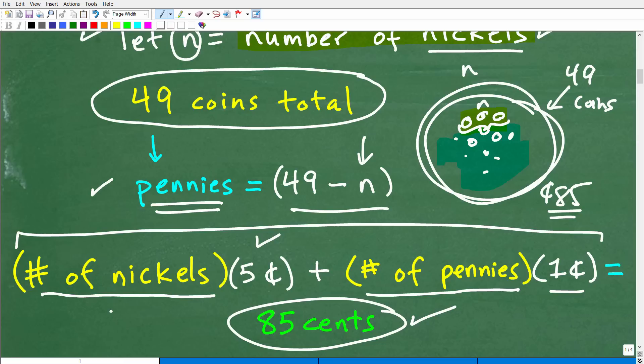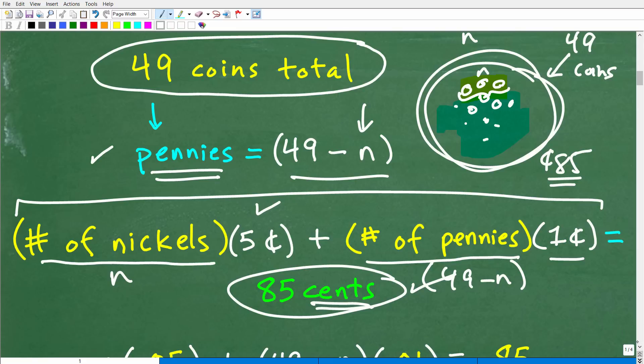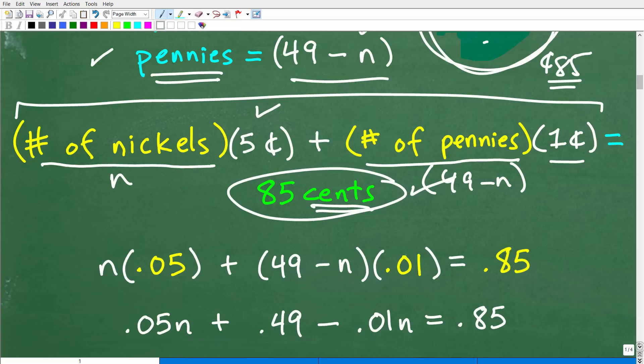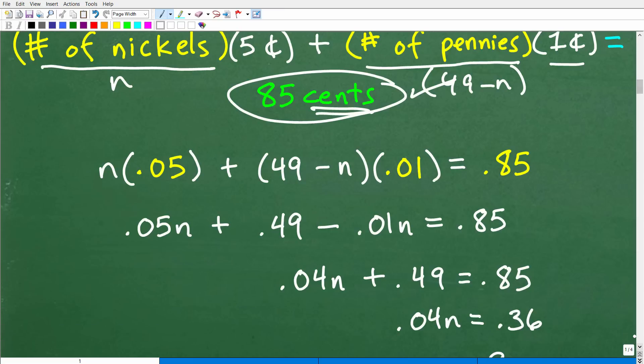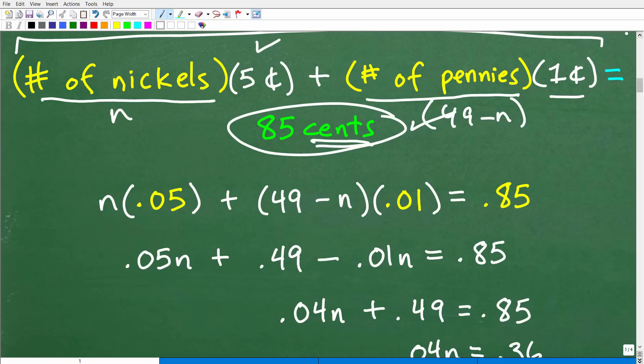We know that it's going to come out to 85 cents. So this is effectively the equation that we need to build. And we know the number of nickels, that's N. And we know the number of pennies, that is what? 49 minus N. So now we're going to actually go ahead and build an equation here. Okay? Now, I'm going to caution you that we can't just use 5 and 1 and 85 when we're talking about cents. So in algebra, when you're solving money problems, things like this, this is a typical type of problem you're going to encounter, things that deal with coins or dollars and cents, you need to convert your cents into decimals.